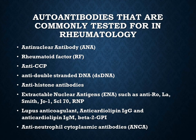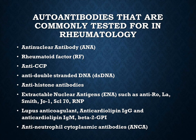These are the autoantibodies that are commonly tested for in rheumatology: antinuclear antibody, rheumatoid factor, anti-CCP, anti-double-stranded DNA, anti-histone antibodies, extractable nuclear antigens, lupus anticoagulant, anti-cardiolipins, anti-phospholipid antibodies, and anti-neutrophil cytoplasmic antibodies, or ANCA.